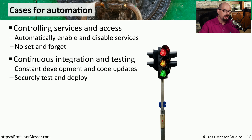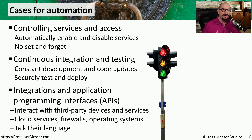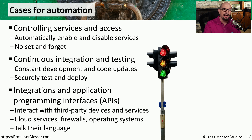Application developers can use scripting to provide constant development and code updates and push those code updates automatically out to systems. And when you're working with a cloud-based infrastructure, a firewall, or almost any other device in your infrastructure, you may want to use automation to speak directly to the application programming interfaces, or APIs, on those devices. This allows you to programmatically control those devices without manually having to log in and click things on the screen. The script handles the process of communicating to the API and making any changes necessary on that device.